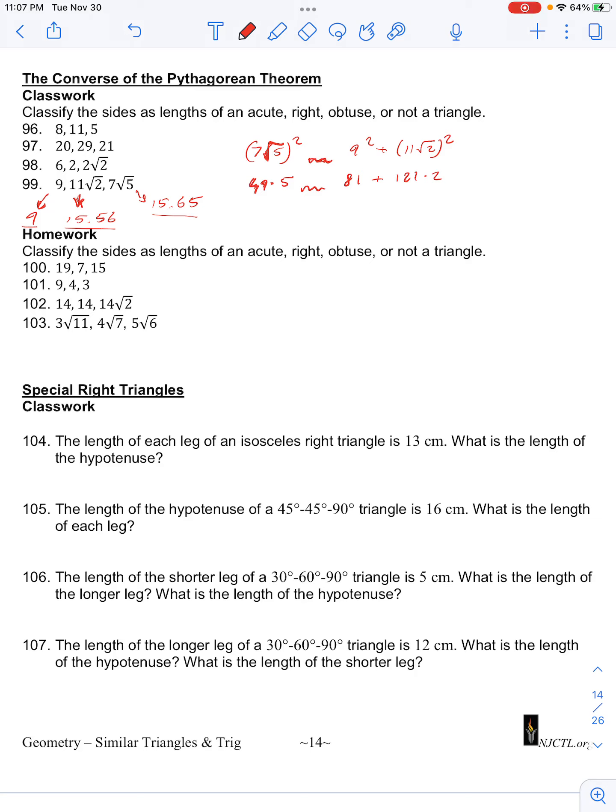this will be 49 times 5 will be 245. It has some relationship to 81 plus 242. And so 245 has some relationship to 81.